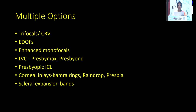So what are the options for correcting this? These are trifocals, continuous range of vision, extended depth of focus lenses, enhanced monofocals, and laser vision correction options like PresbyMAX, PresbyOn, and presbyopic ICL — this is an advanced concept. There are also corneal-based procedures like corneal inlays such as Kamra and Raindrop, and scleral expansion-based procedures.